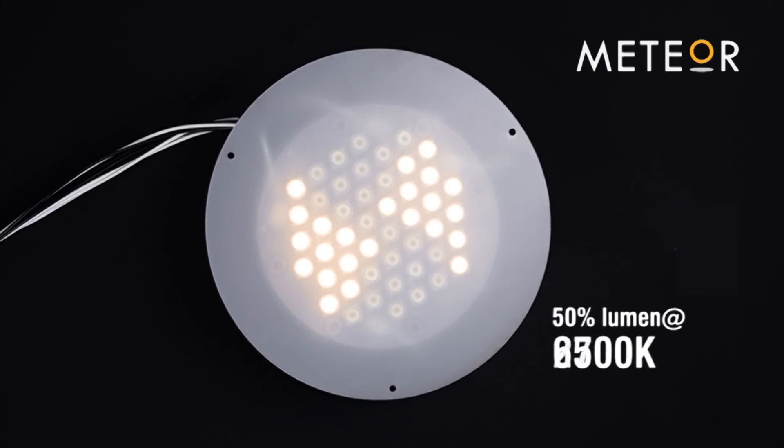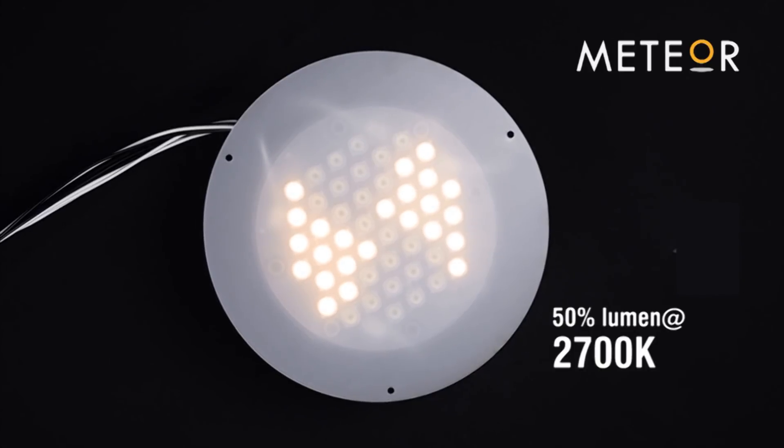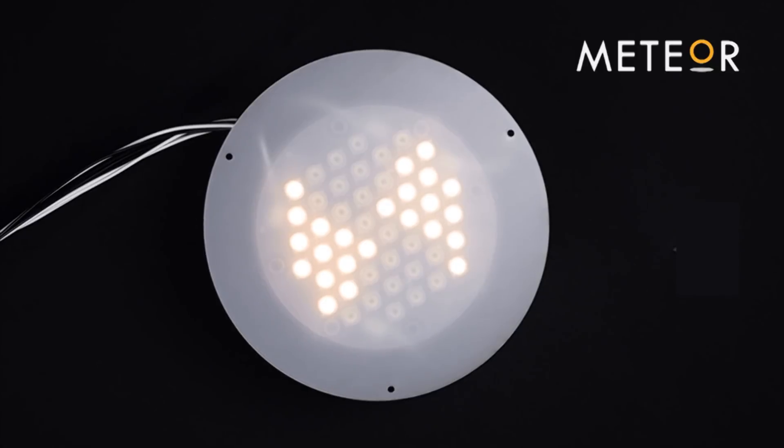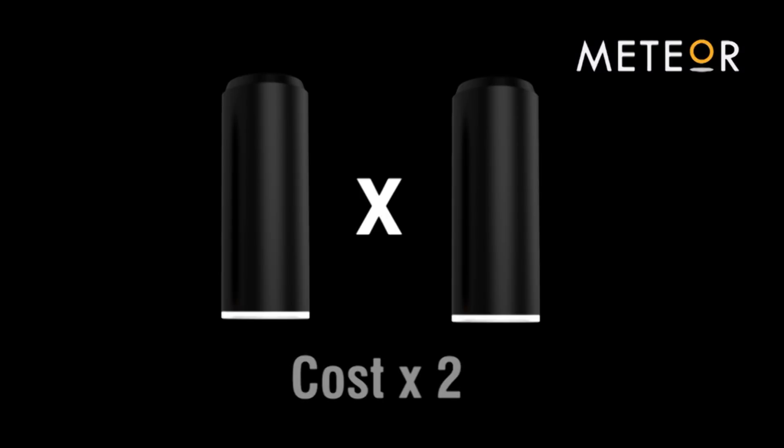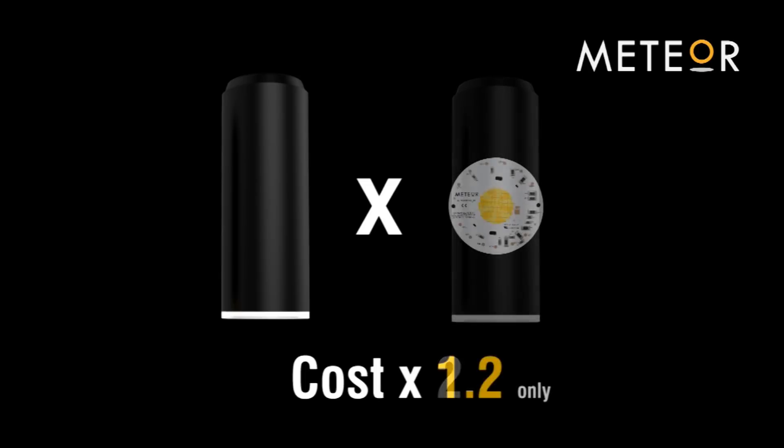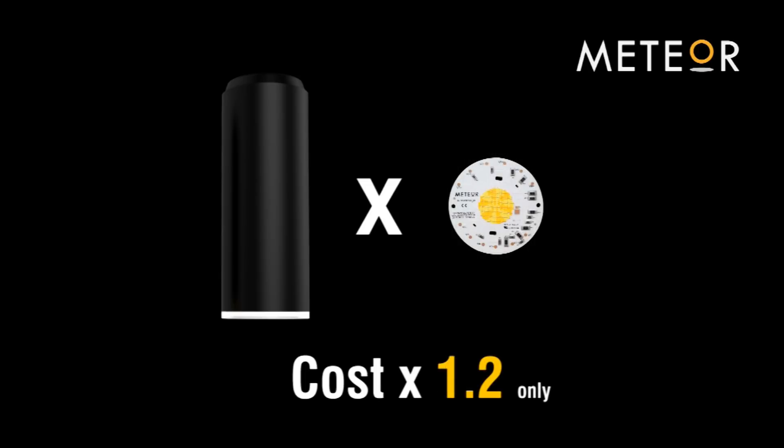In order to get the full 100-watt output at 2700 or 6500 color temperature, you would need to specify double the amount of fixtures for that space. Doubling the amount of fixtures means doubling the cost. Since cost is often the reason tunable white fixtures are not specified, Meteor developed ColorFlip to pack more LEDs into the same size fixture allowing us to deliver the full 100-watt output across all color temperatures. This enabled us to offer remarkable savings for all tunable white solutions.